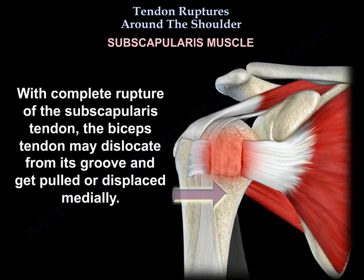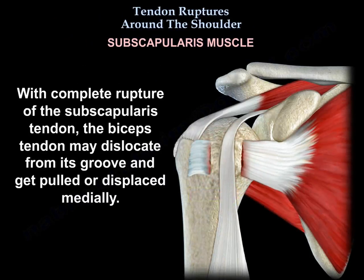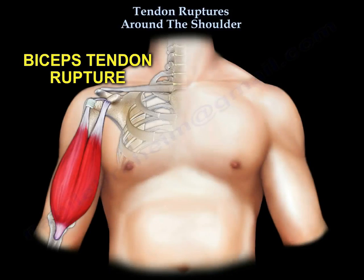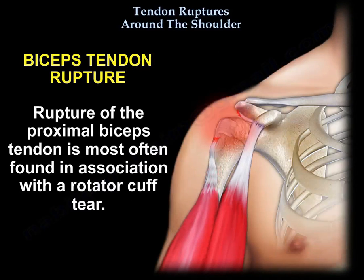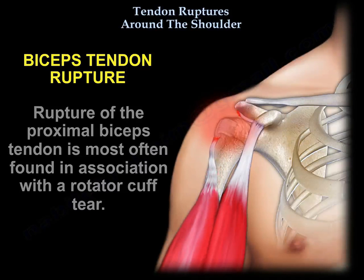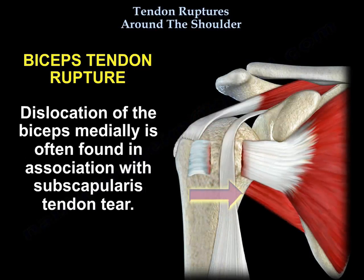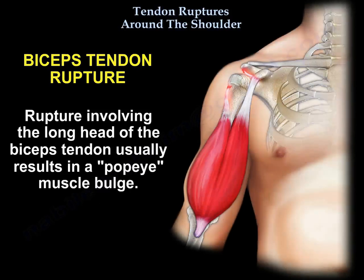With complete rupture of the subscapularis tendon, the biceps tendon may dislocate from its groove and gets pulled or displaced medially. Rupture of the proximal biceps tendon is most often found in association with a rotator cuff tear. Dislocation of the biceps medially is often found in association with subscapularis tendon tear. Rupture involving the long head of the biceps tendon usually results in a Popeye muscle bulge.